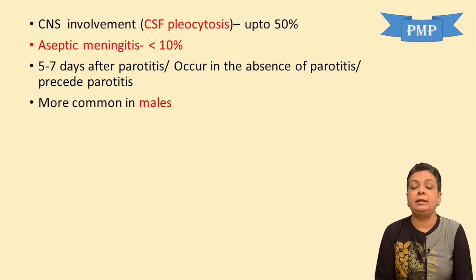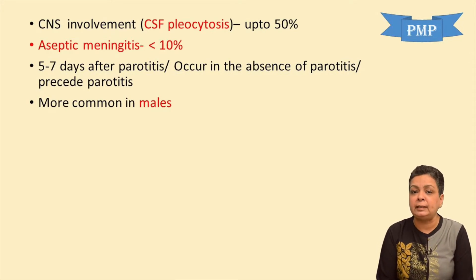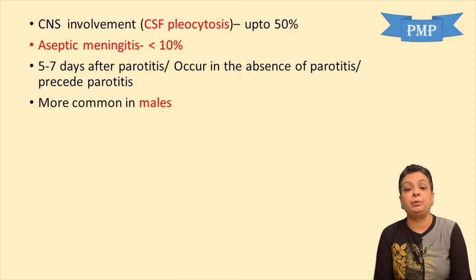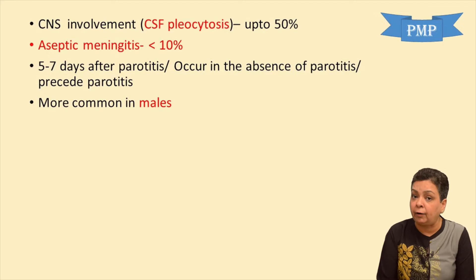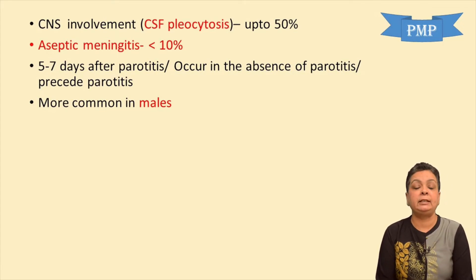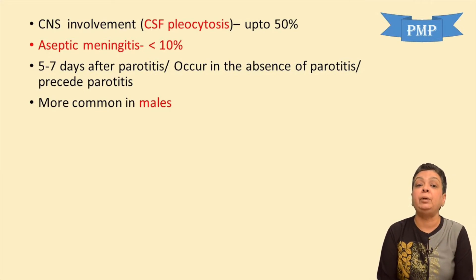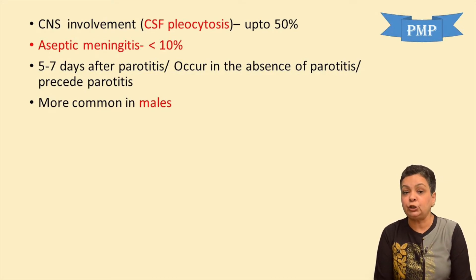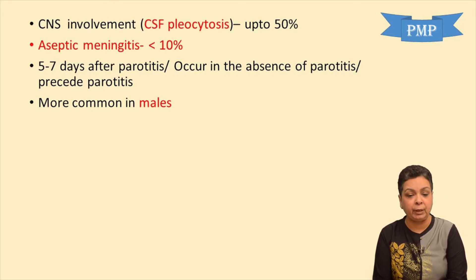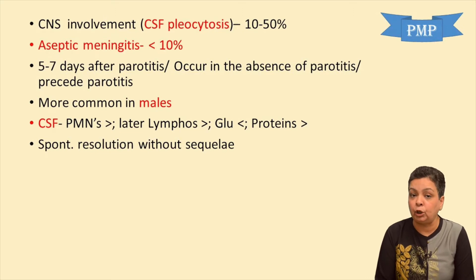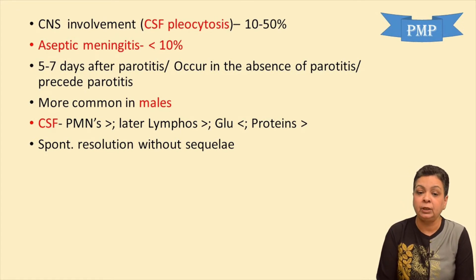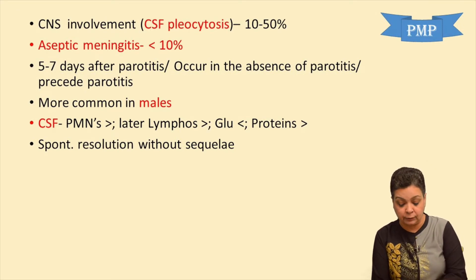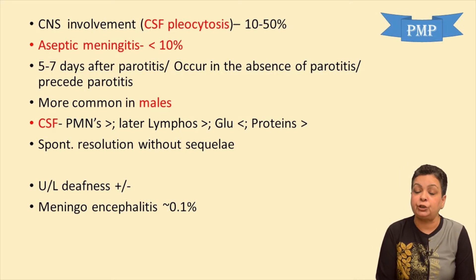Moving on to CNS involvement: in about 50% of individuals, if we examine the CSF, it would show pleocytosis. But 10% will present with symptoms of aseptic meningitis — fever, neck rigidity, headache, altered sensorium. This develops either 5 to 7 days after parotitis, but sometimes may occur in the absence of parotitis or may even precede it. This CNS involvement is more often seen in males. CSF shows initially polymorphonuclear leukocytes are increased, then lymphocytosis; glucose is reduced and proteins are raised. Spontaneous resolution generally occurs, but sometimes residual unilateral deafness may remain. Meningoencephalitis is a very rare complication, seen in less than 0.1% of individuals.